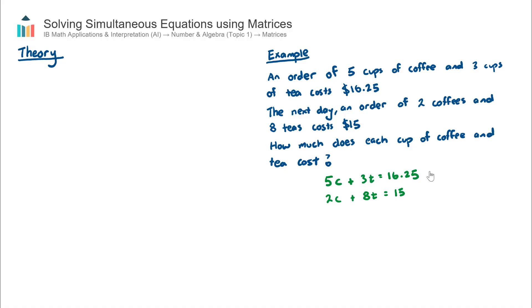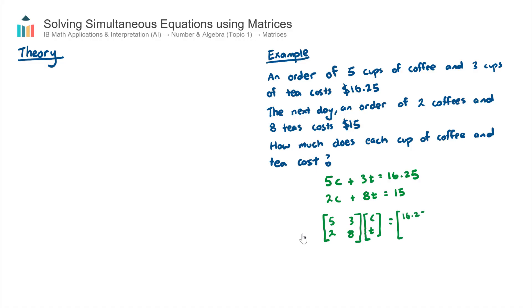The first step is to convert the two equations from algebraic form into matrix form. We will have a two-by-two coefficient matrix containing 5, 3, 2, and 8 — these are all the coefficients of the unknowns. The next matrix will be a two-by-one unknown or variable matrix, with the two unknowns C and T for coffee and tea. That will equal the constant matrix, which contains 16.25 and 15.